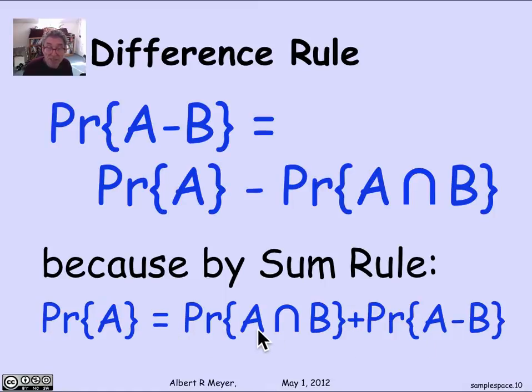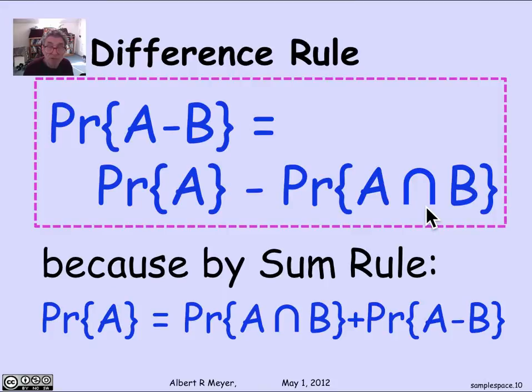That is, A breaks up into the points it has in common with B and the points it doesn't have in common with B. Since those are disjoint, you can add them. So the probability of A equals the probability of A intersection B plus probability of A minus B. I just transpose the A minus B to the left-hand side, and I get the difference rule, which is a rule worth remembering.